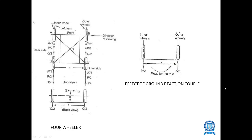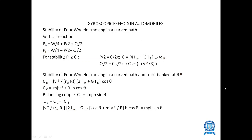There are four wheels — the inner wheel and the outer wheel — for left and right turns, as represented in the diagram. There will be a reaction couple between the two wheels. The gyroscopic effect in automobiles is given as P₀ = W/4 + P₂ + Q/2. For stability, Pi should be greater than or equal to 0. And Cc = M·V²/R·H·cos θ. The balancing couple Cv = MGH·sin θ. Therefore, Cg + Cc = Cb.